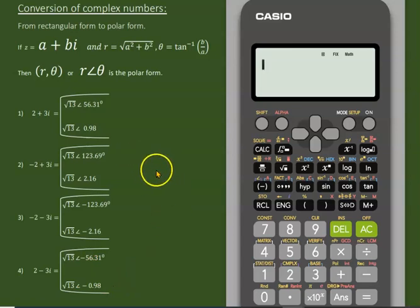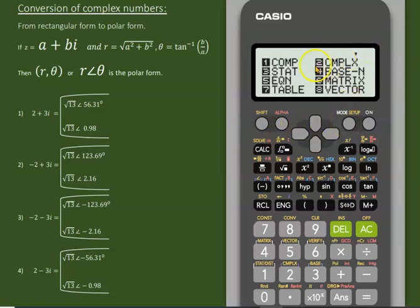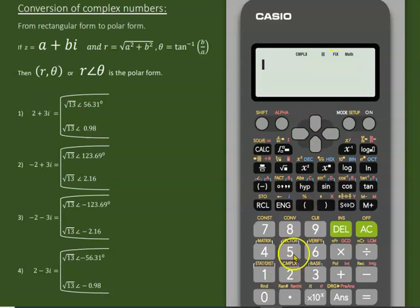So here the calculator can help out in this confusion. Here first of all, we will take the complex mode which comes under 2. Then we'll write the complex number 2 + 3i.